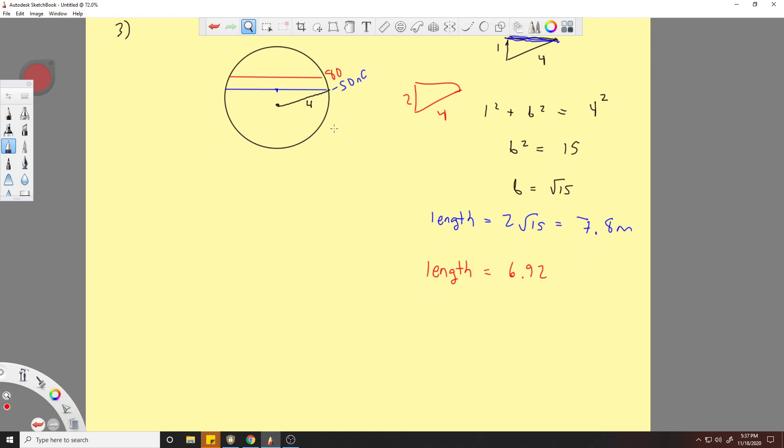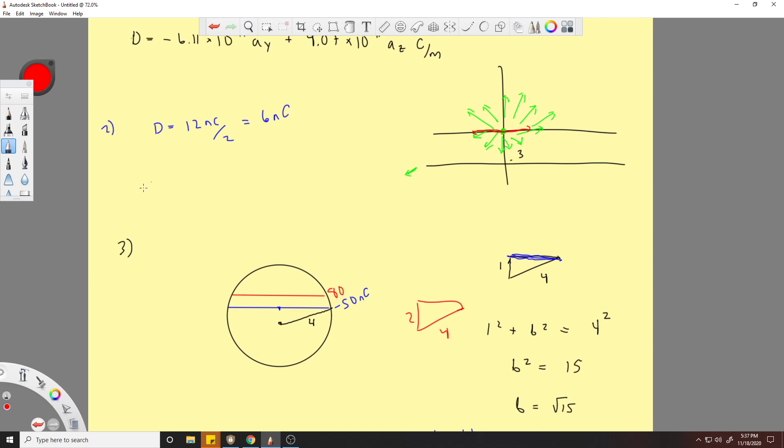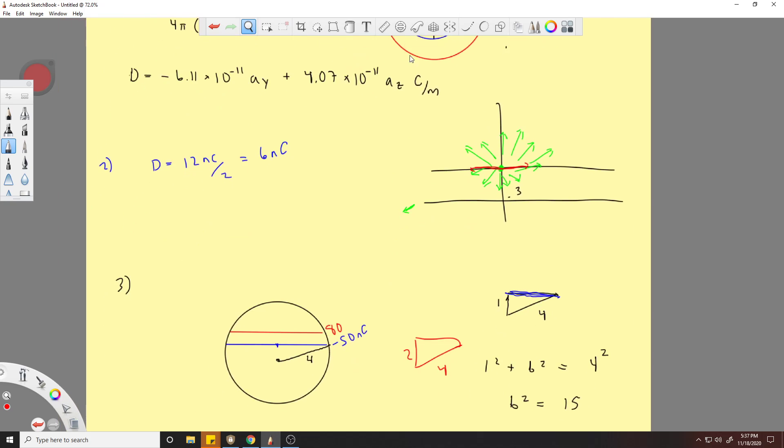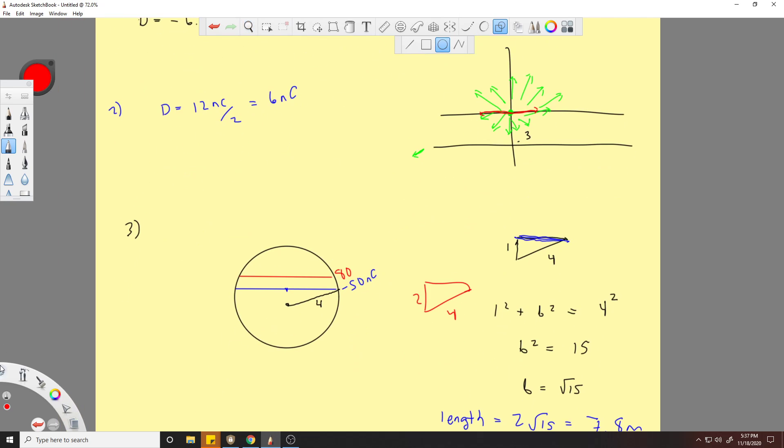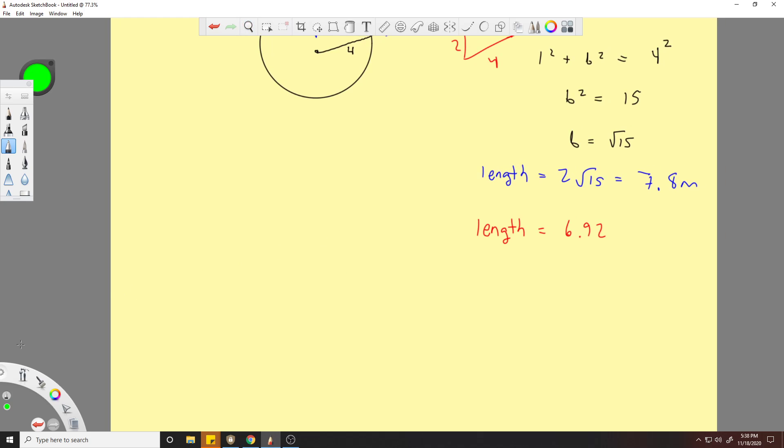So now we have both the lengths. Now we just need to multiply it by the charge. I also forgot one little thing - since this is a four meter radius, you're going to be enclosing this 12 nanocoulomb charge, so that 12 nanocoulomb charge is going to be in there as well.